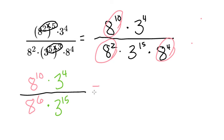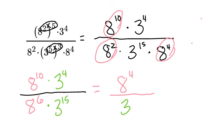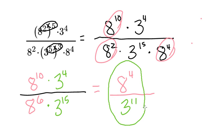Now this is pretty easy to simplify. For my 8s, I've got 10 and 6 — the 10 is larger in the numerator, so that's 8 to the power of 10 minus 6, which is 8 to the power of 4. Then when I look at my 3s, I've got 4 and 15 — 15 is larger in the denominator, so I've got 3 there, and 15 minus 4 is 11. Each base only appears once, so our final answer is 8 to the power of 4 over 3 to the power of 11.